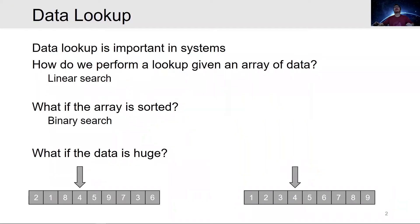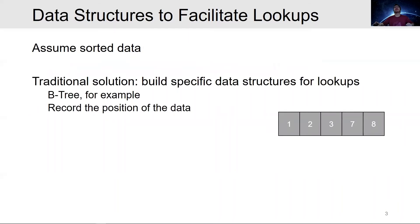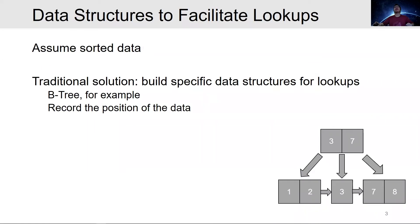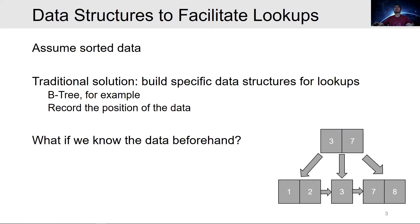What if the data is huge? Again, let's assume that our data is at least partially sorted. Traditionally, people have built data structures to accelerate lookups. B-tree, for example, records the position of the data to achieve logarithmic lookup time with relatively low memory cost for the indexes. It is a popular data structure suitable for general use cases. Can we do even better with more information, for example, if we know the data distribution?